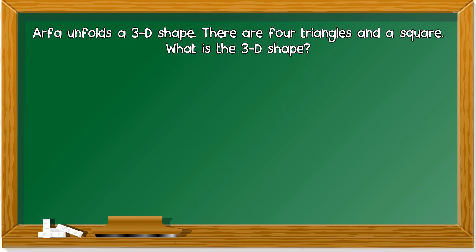Let's take a look at question 1. Alpha unfolds - unfolds means opening - a 3D shape. He takes the 3D shape and opens it. There are 4 triangles and a square. What is the 3D shape?